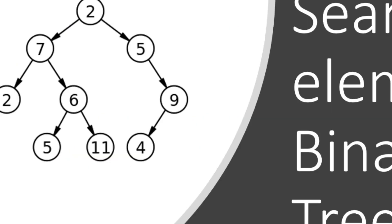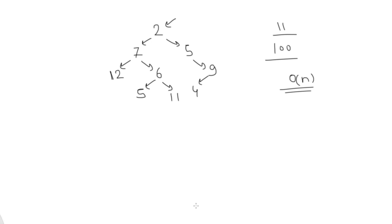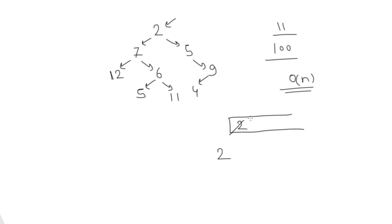Another way is the iterative approach. We apply the same logic used in level-order traversal. We take the help of a queue. We pass the root node, put the root node into the queue, then extract the root node and check whether the element is our key. If not, we put its left and right child nodes into the queue.